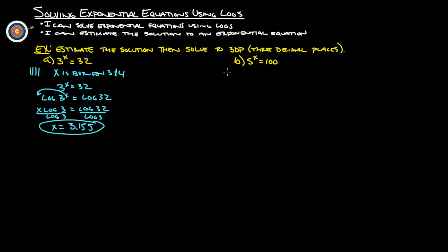Same thing here. 5 to the first is 5, to the second is 25, 5 cubed is 125, so we know it's between 2 and 3. So it's going to be about 2 point something or other.